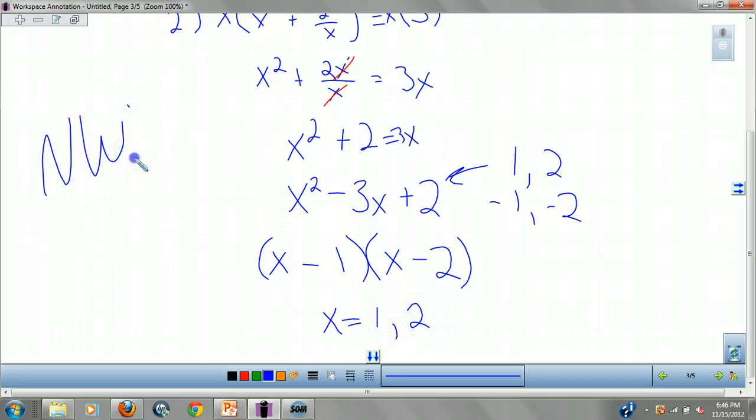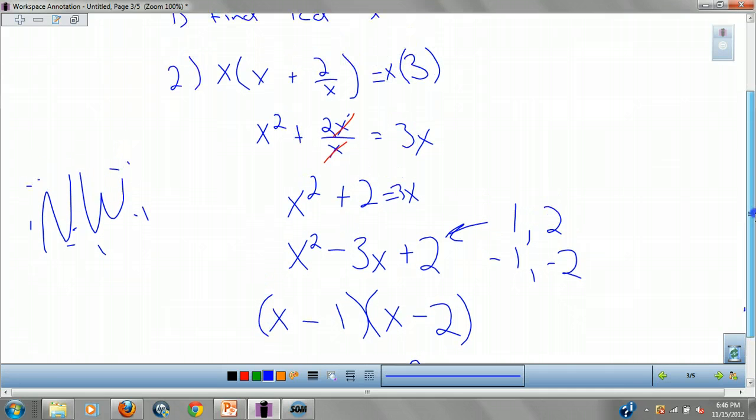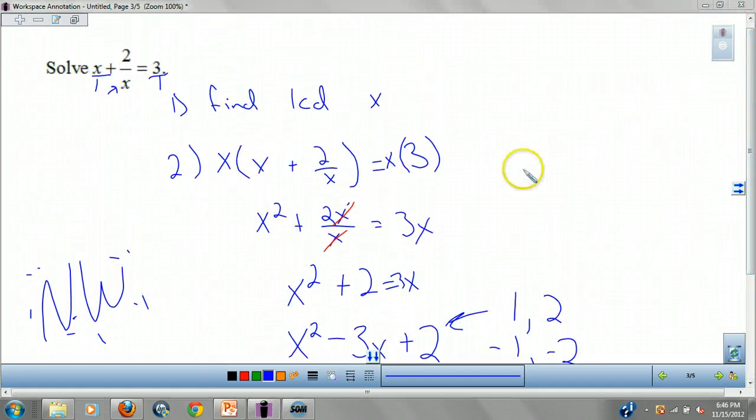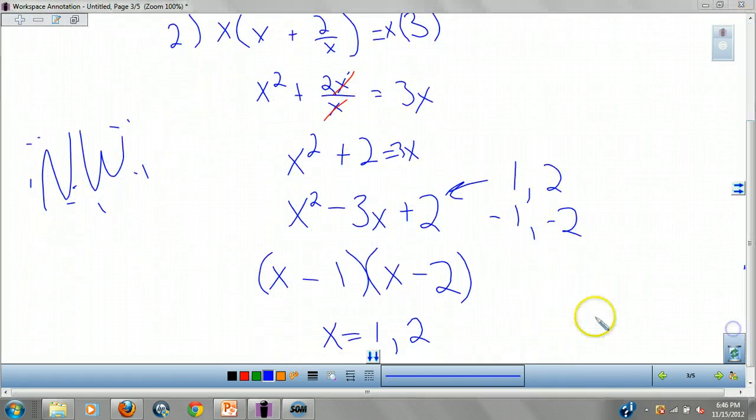And guys, don't forget, all examples are noteworthy. Now I have to check to see if these are extraneous. What that means is I look at my original equation. And I say, if I plug 1 or 2 into my original equation, does it work? Do I get any funny business? Well, 1 plus 2 over 1 is 3. Yep. 2 plus 2 over 2, which is 1, is 3. They both work, no problems. So we have no extraneous solutions.